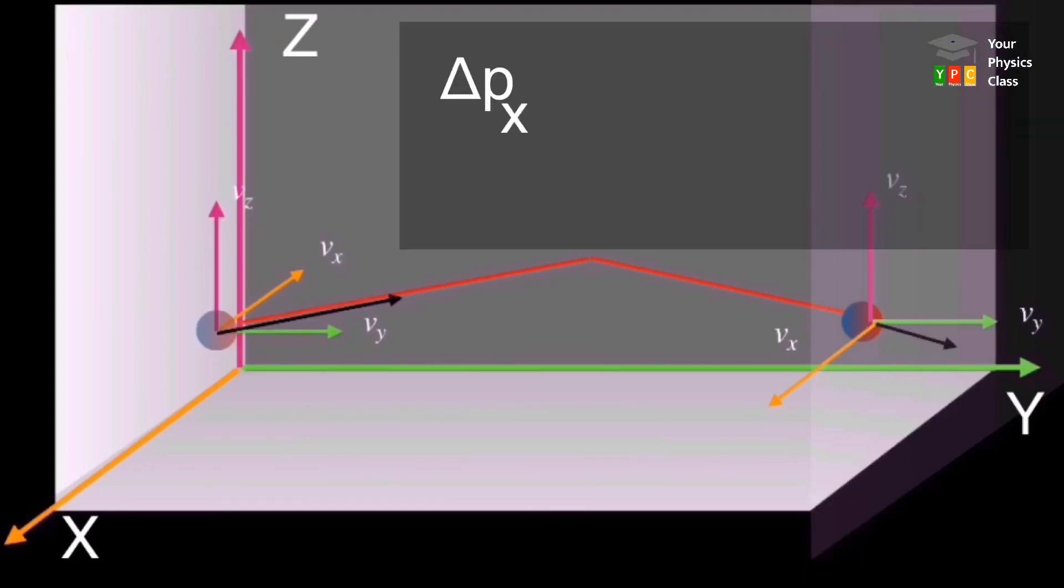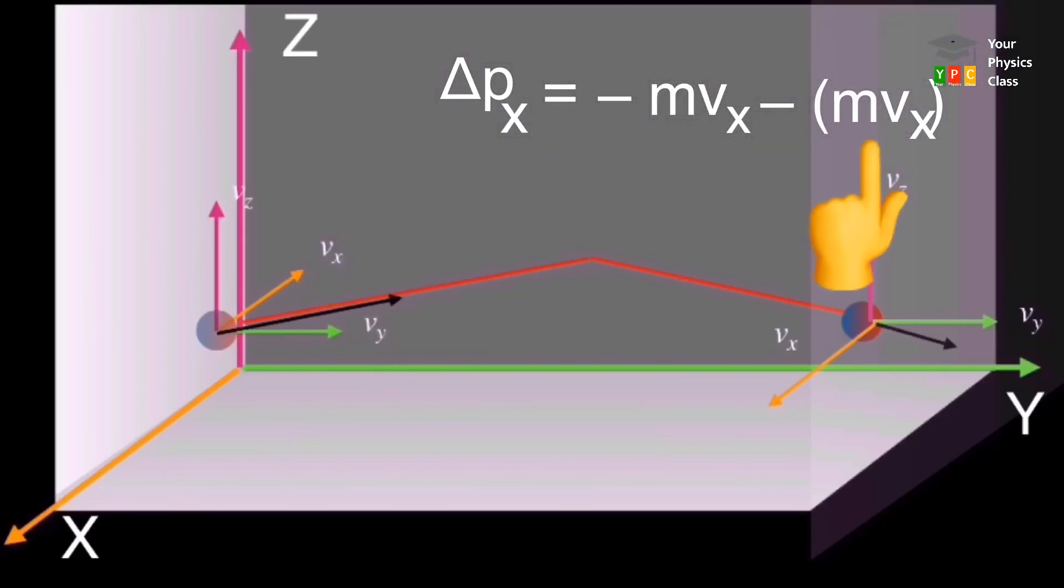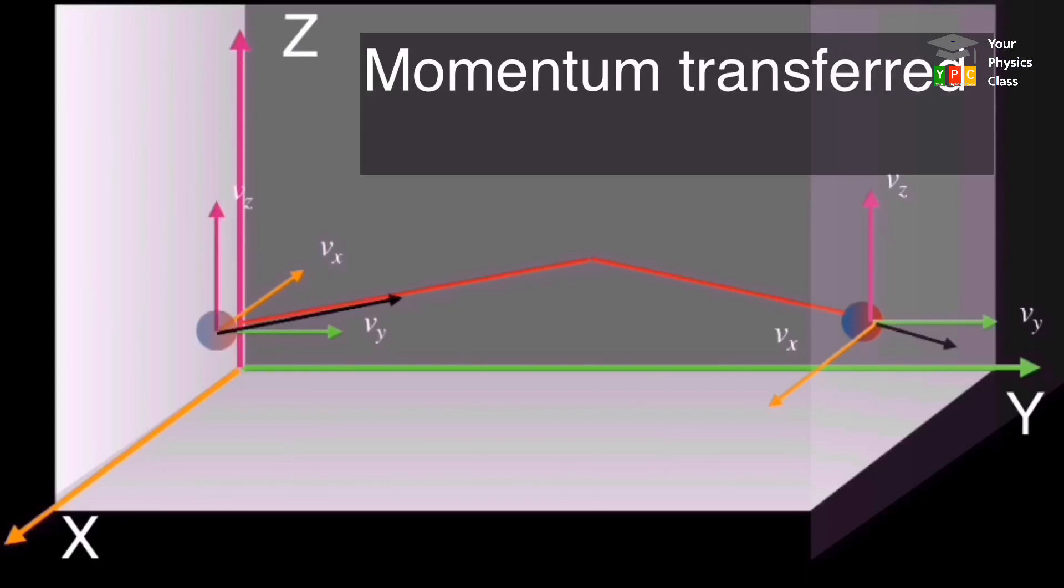So, change in momentum is equal to final momentum minus initial momentum. Yahan final velocity negative hai, isi liye momentum negative rahega. Aur initial velocity positive hai, isi liye momentum positive rahega. To change in momentum milega minus twice MVX. Thus, momentum transferred to the wall is plus twice MVX.